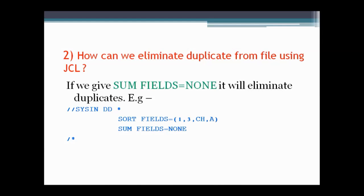The next question asks how we can eliminate duplicate records from a file using JCL. This can be achieved by using the SORT utility in JCL, and the option we need to use is SUM FIELDS=NONE. The syntax for this is shown here.